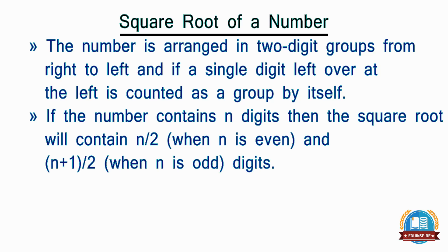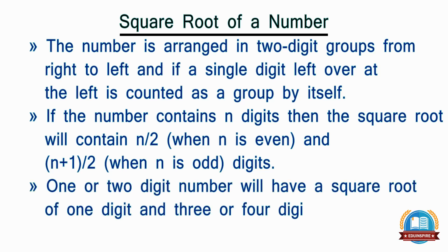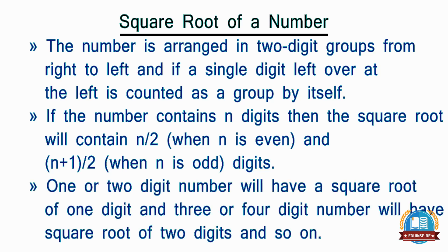If the number contains n digits, then the square root will contain n/2 digits when n is even, and (n+1)/2 digits when n is odd. So a 1 or 2 digit number will have a square root of 1 digit, a 3 or 4 digit number will have a square root of 2 digits, and so on.